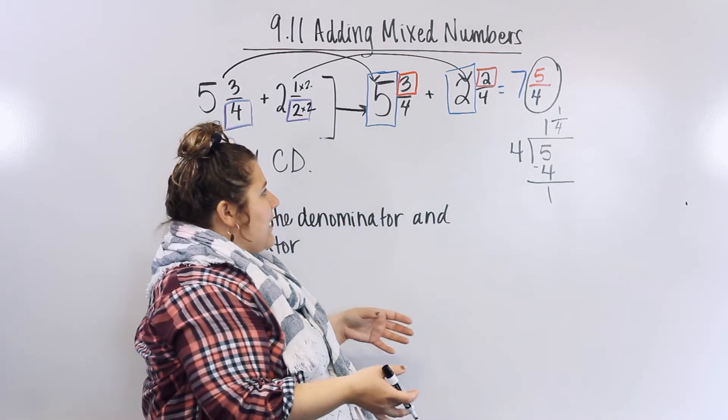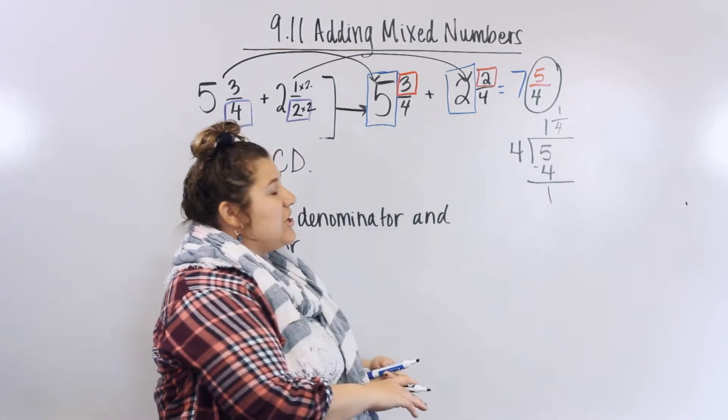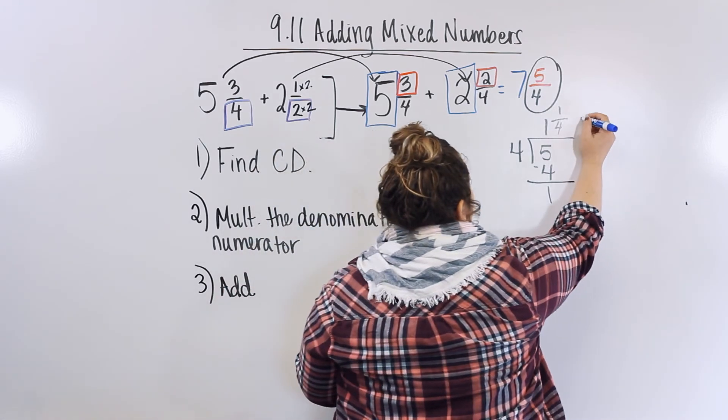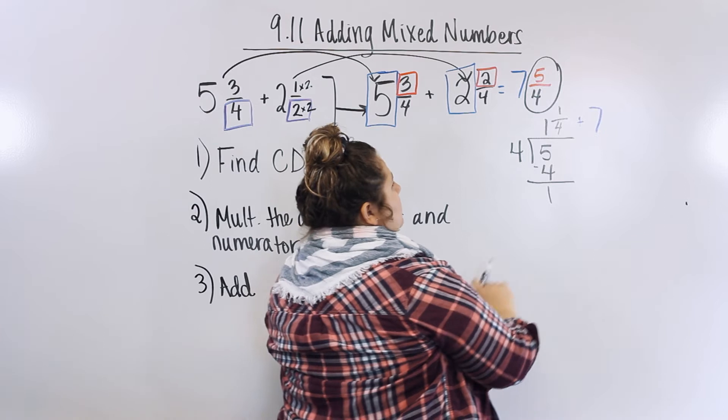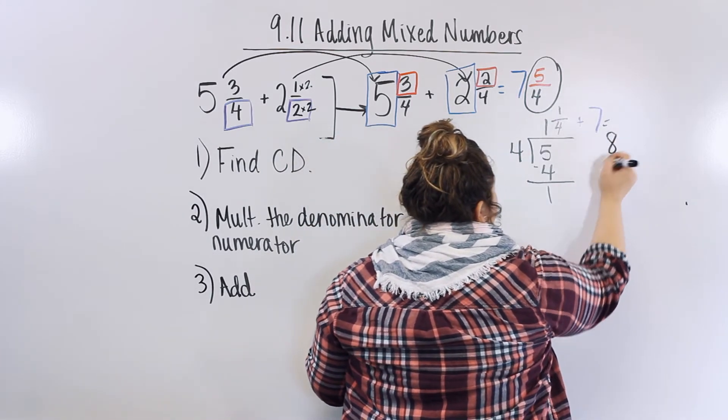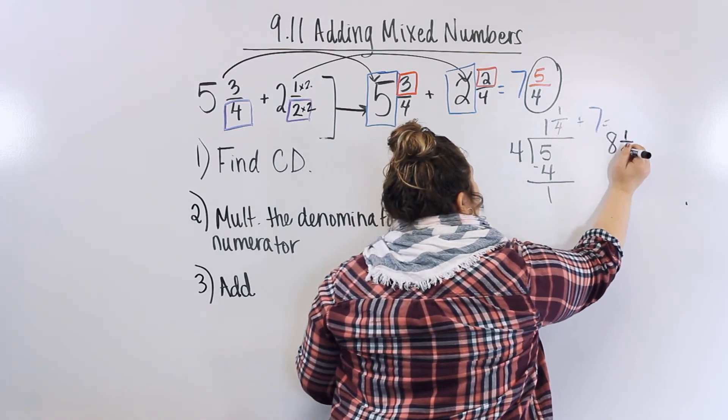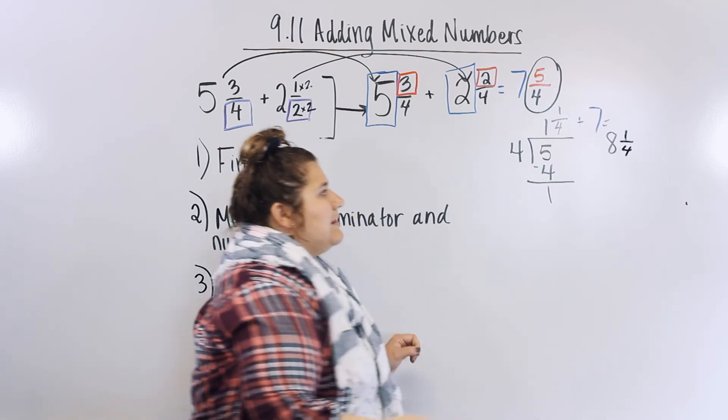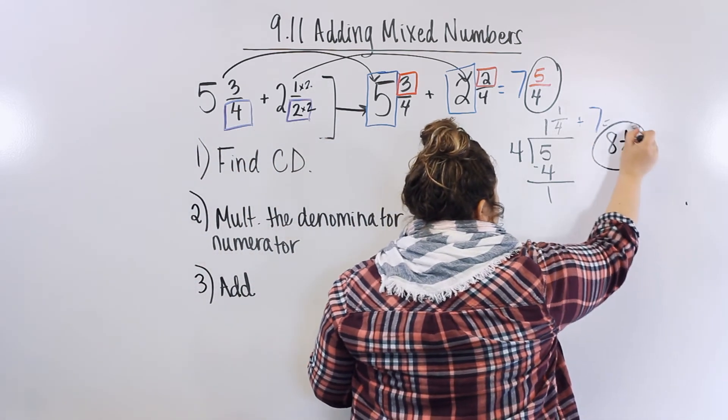Now, you may be asking, but Ms. Hanley, what about the 7? We just add plus 7. 7 plus 1 is 8. There's no other fraction here. So I just bring down 1 fourth. And that's going to be our new answer.